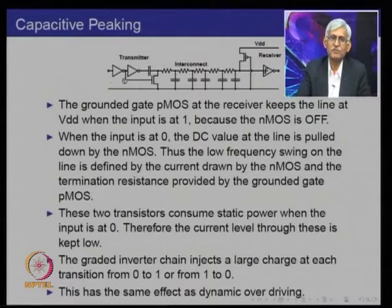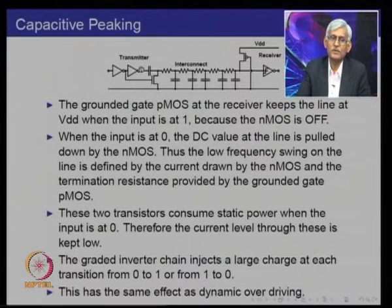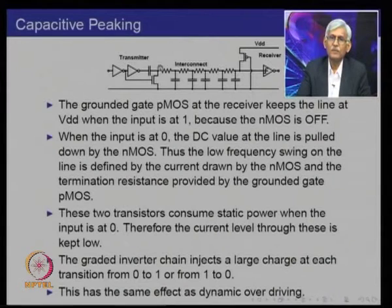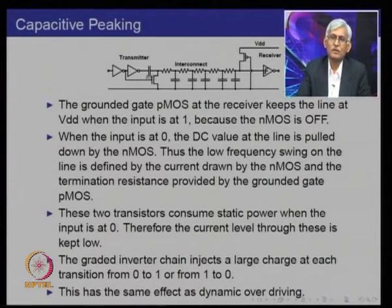The actual high frequency drive is provided by a chain of inverters with progressively larger geometries to drive a large capacitive load. The series capacitor provides capacitive peaking — only when there is a transition is it coupled to the line. If the input remains at 0 or remains at 1, there is no drive through this capacitor. This is exactly like providing a sharp current pulse of positive or negative value to the line during transitions, which is what we had done during dynamic overdriving. So it is a simpler replacement for the concept of dynamic overdriving, and we do not need the NAND-NOR-AND feedback circuit.